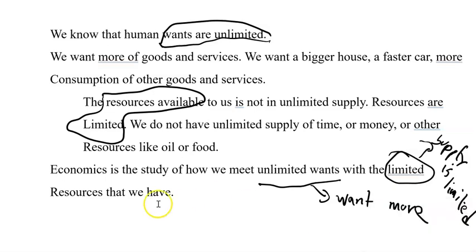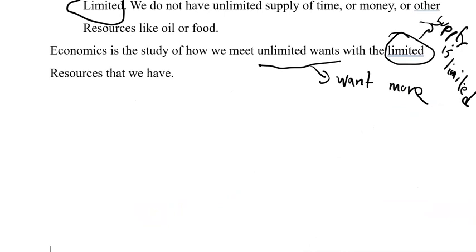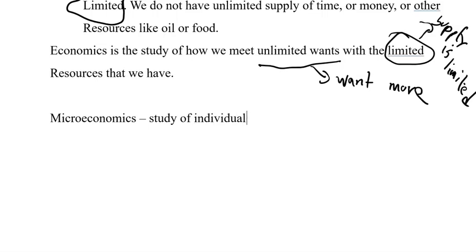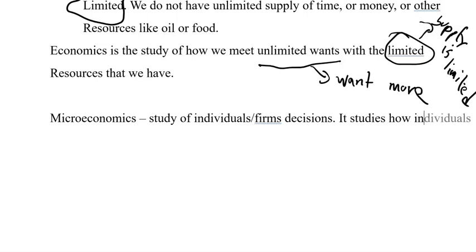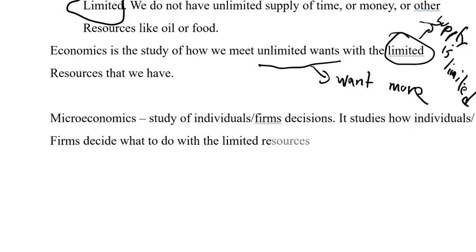From here we can talk about the two broad branches of economics. Microeconomics is the study of individual and individual firms' decisions. Basically, microeconomics studies how individuals or firms decide what to do with the limited resources that they have.